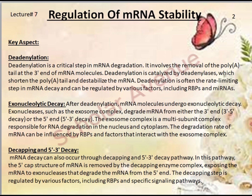Third is exonucleolytic decay. After deadenylation, mRNA molecules undergo exonucleolytic decay. Exonucleases such as the exosome complex degrade mRNA from either the three-prime end (3'→5' decay) or the five-prime end (5'→3' decay). The exosome complex is a multi-subunit complex responsible for RNA degradation in the nucleus and cytoplasm. The degradation rate of mRNA can be influenced by RBPs and factors that interact with the exosome complex.